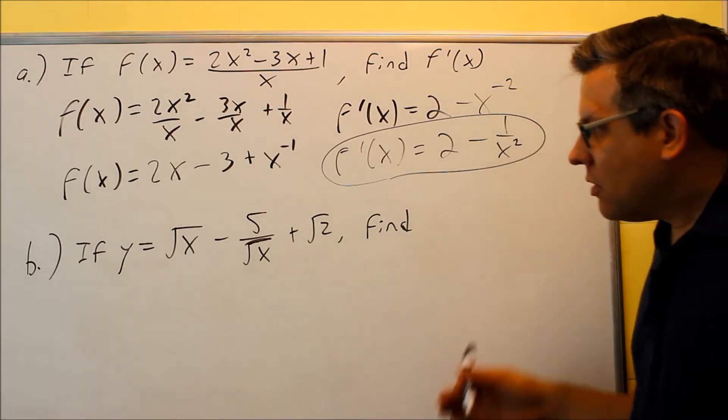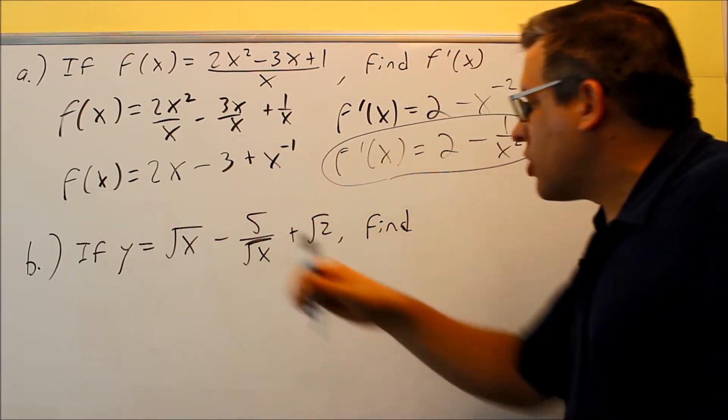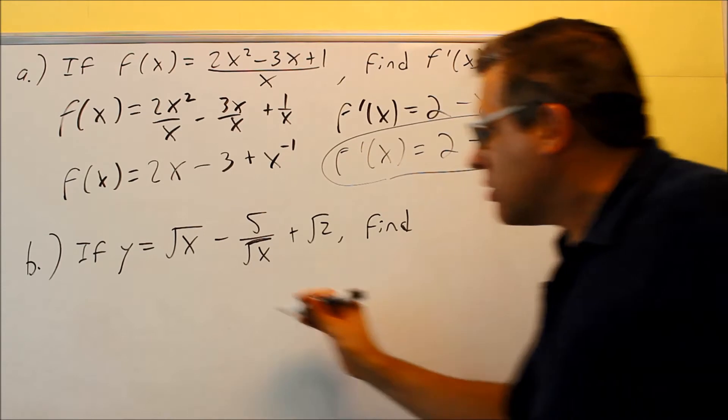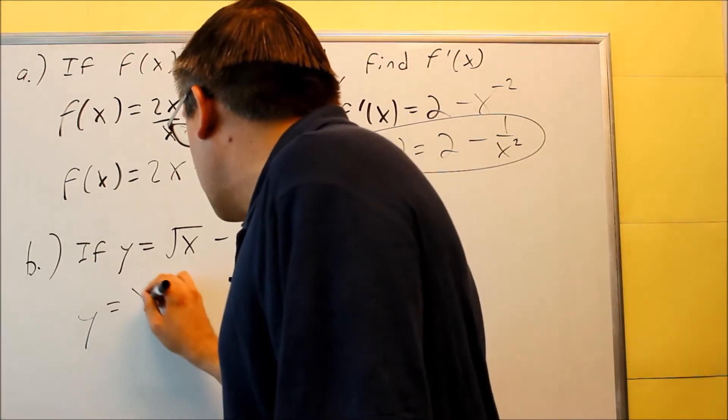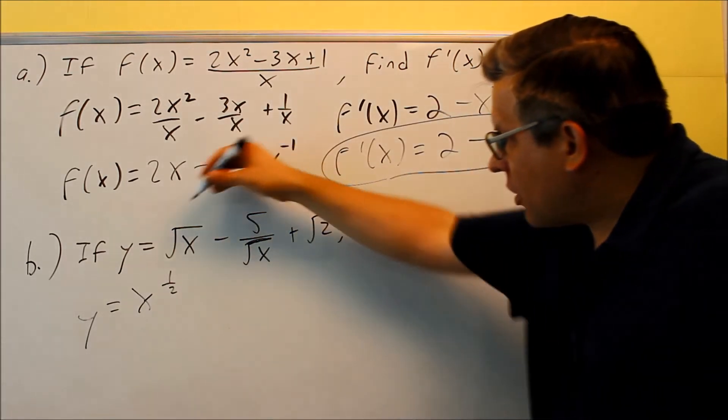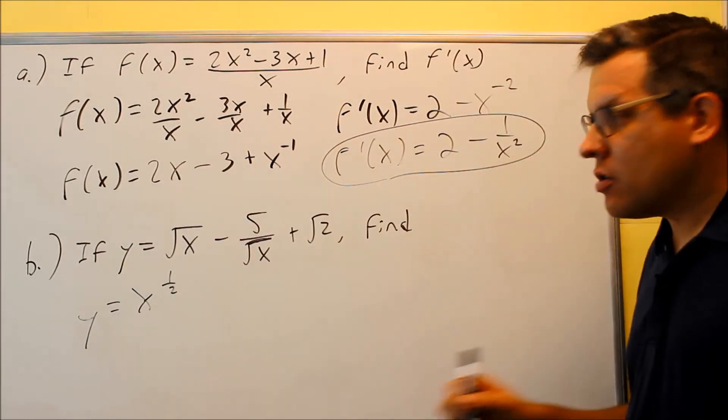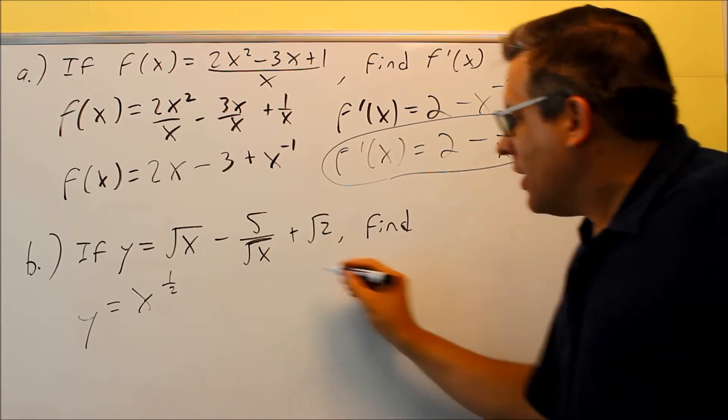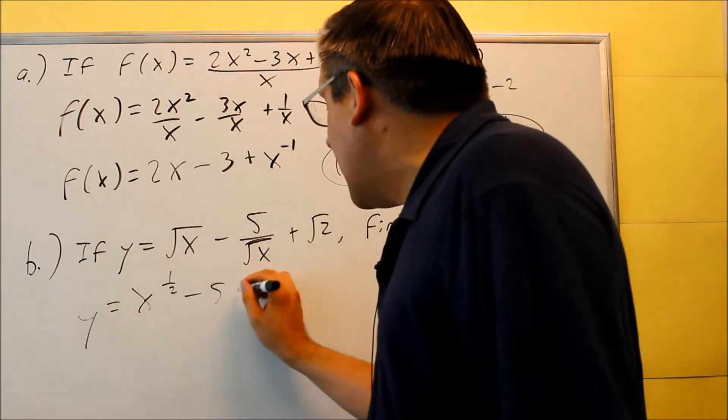For part B, we need to first change all this into powers, so we can apply the power rule. This is x to the 1 half. Anytime you have a square root power, it's always 1 half, because there's an index of 2 that's inside there, so you get x to the 1 half.